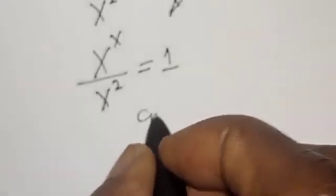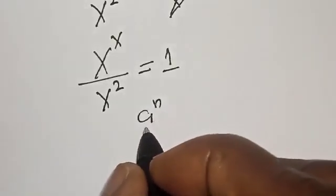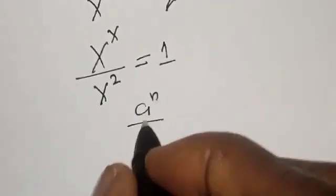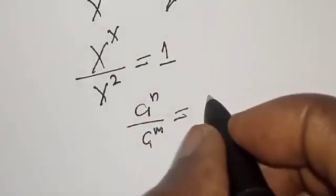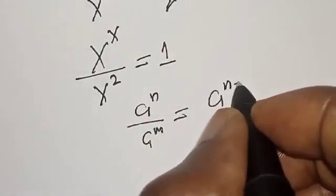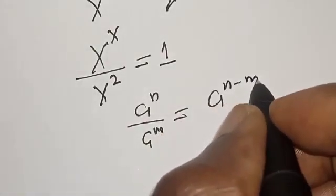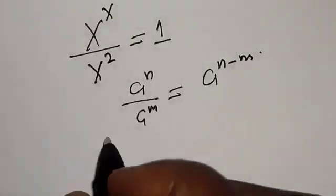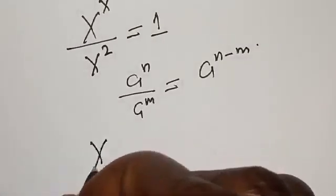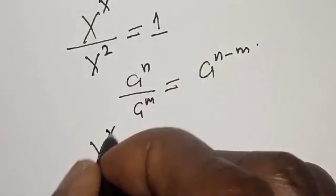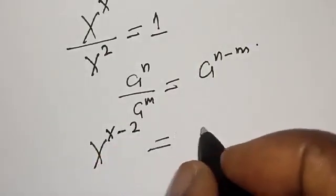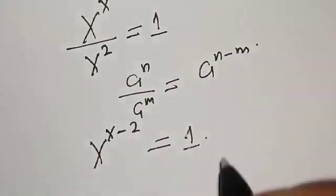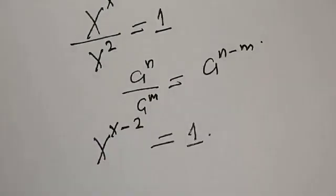Now remember that if you have a raised to power n over a raised to power m, this is the same thing as a raised to power n minus m. Then our left hand side becomes s raised to power s minus two, is equal to one.